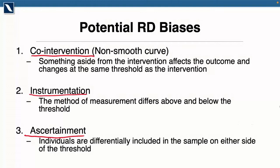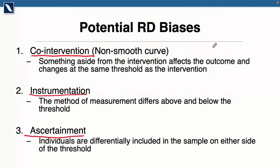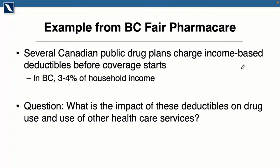I find it easiest to teach regression discontinuities with an example. I'm going to go into two papers we wrote using data from Fair PharmaCare. Canada has universal coverage for physician and hospital services in every province, but drug coverage is highly variable, with many different drug plan designs across provinces. In British Columbia, which is one of several Canadian provinces with an income-based deductible program, most people on the universal drug plan have to spend 3 or 4% of household income on covered prescription drugs before the plan will actually kick in.